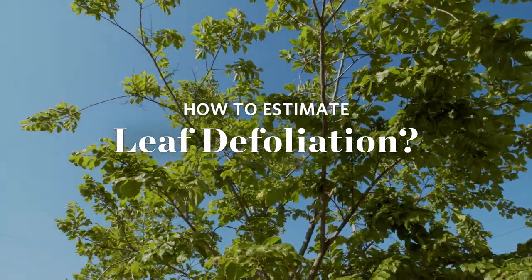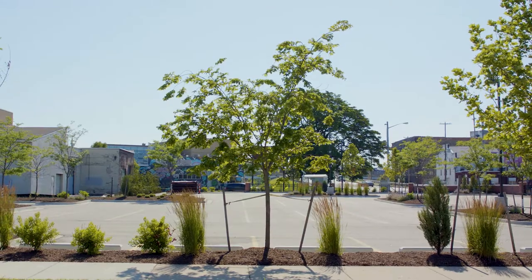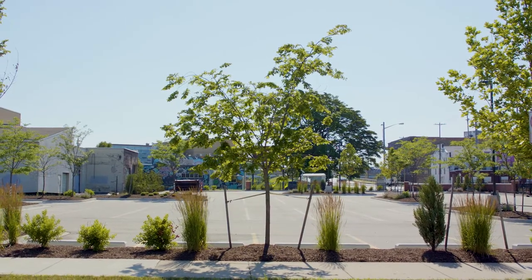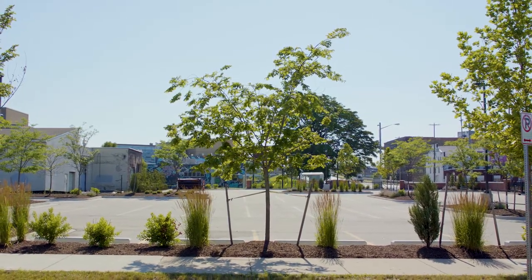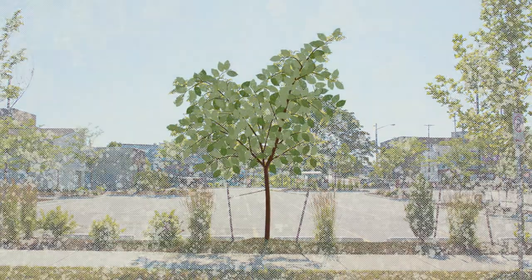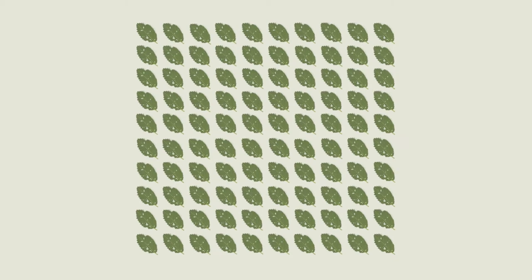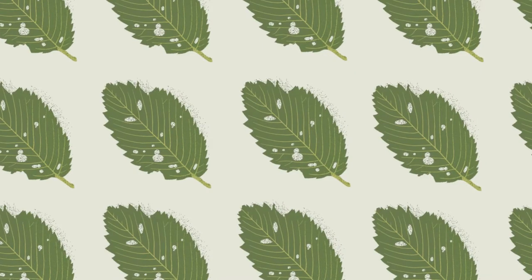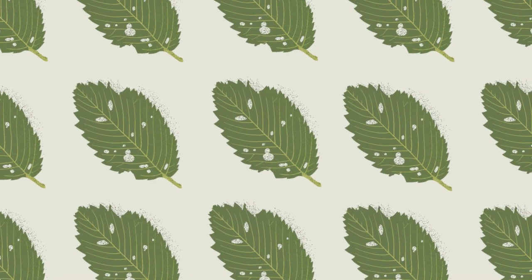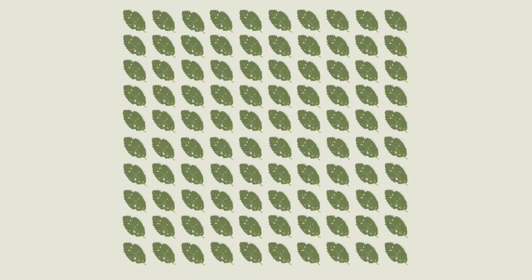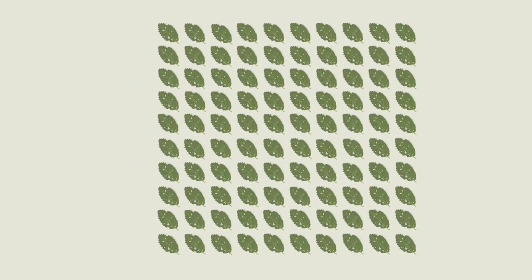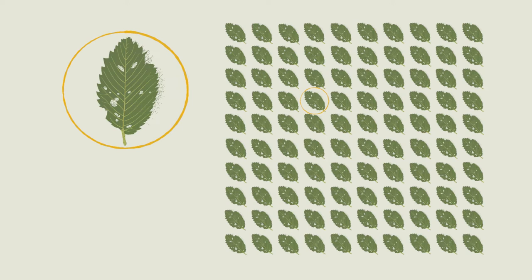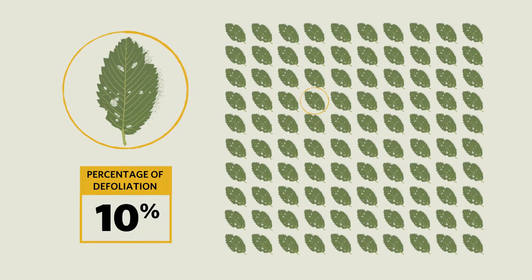To estimate leaf defoliation, you need to estimate the entire percentage of total leaf surface that is missing because of holes or tears. To do that, consider a quilt. Imagine you could take every leaf off a tree and stitch it together to form a leaf quilt — the percentage of leaf defoliation would be the total percentage of that quilt that was missing. For example, if the quilt is made up of 100 leaves and each one has a few small holes in it, the percentage would be about 10% of the total area of the quilt that is missing because of defoliation.